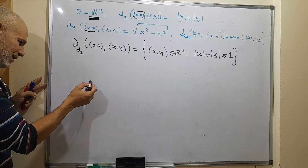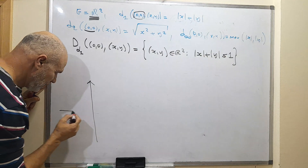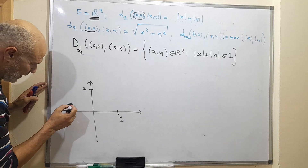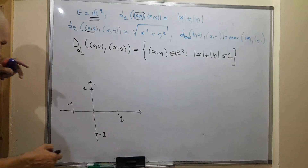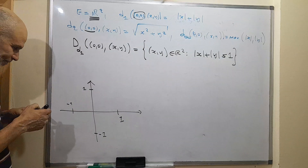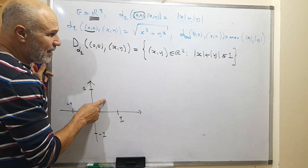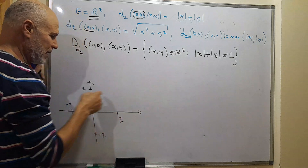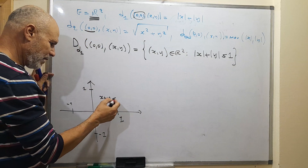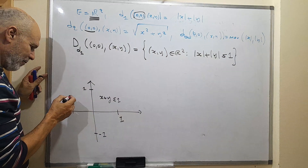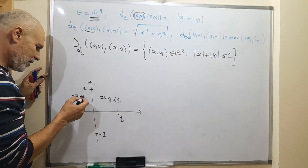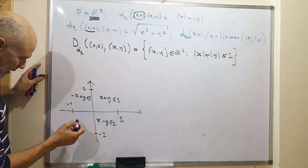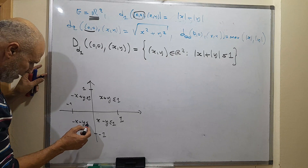If we take the plane, marking 1, -1 on both axes, in the first quadrant the absolute values simplify so we have x plus y less than or equal to 1. In the second quadrant we have minus x plus y less than or equal to 1. In the third quadrant we have minus x minus y less than or equal to 1. And similarly for the fourth.